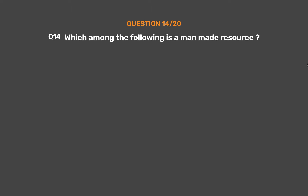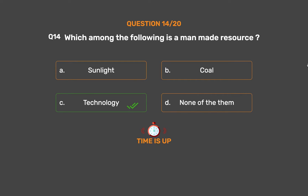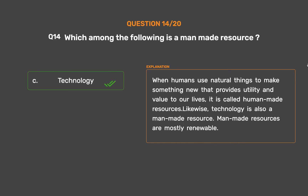Question No. 14. Which among the following is a man-made resource? Option A: Sunlight. Option B: Coal. Option C: Technology. Option D: None of them. The correct answer is Option C: Technology. When humans use natural things to make something new that provides utility and value to our lives, it is called a human-made resource. Technology is also a man-made resource, and man-made resources are mostly renewable.